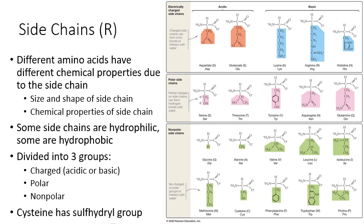There's only one amino acid I'll ask you to remember specifically: cysteine. Cysteine has the sulfhydryl group (SH) and is able to form disulfide bridges. Methionine also has a sulfur, but it is not a sulfhydryl group, so only cysteine can form disulfide bridges. This ends up being pretty important for the structure of proteins that cysteine is part of.